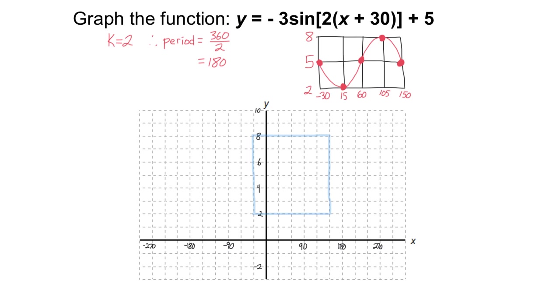If it helps, you can actually just draw this outline of this box on your grid, just lightly, just to help you figure out where to plot your points. But just follow the same pattern. Start on the central axis, end on the central axis. Go halfway between. First, you're going down. So halfway between the first two dots, you're down at the bottom. Halfway between the last two dots, you're up at your maximum.